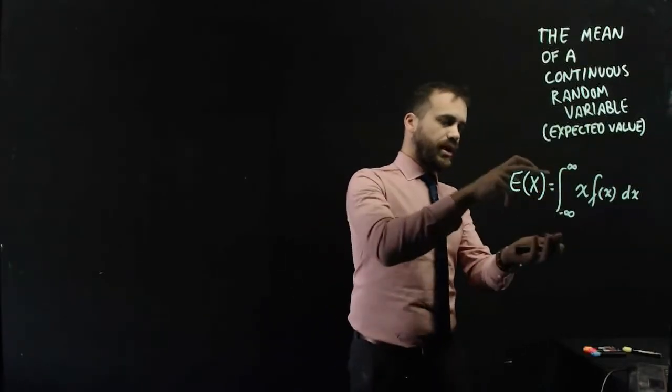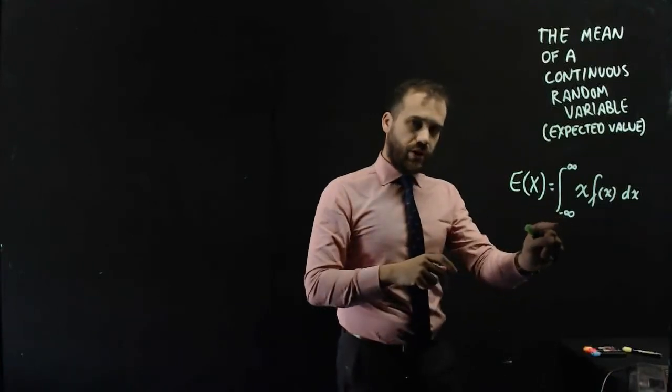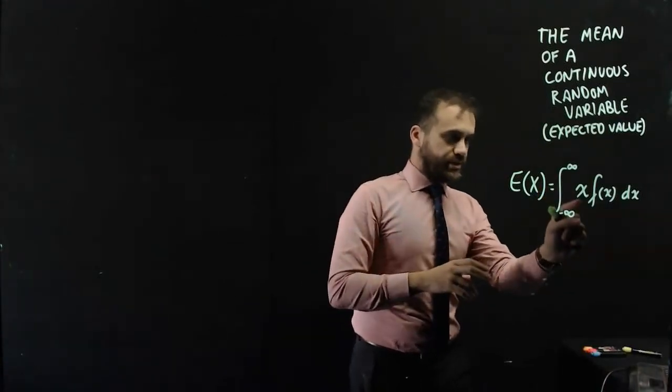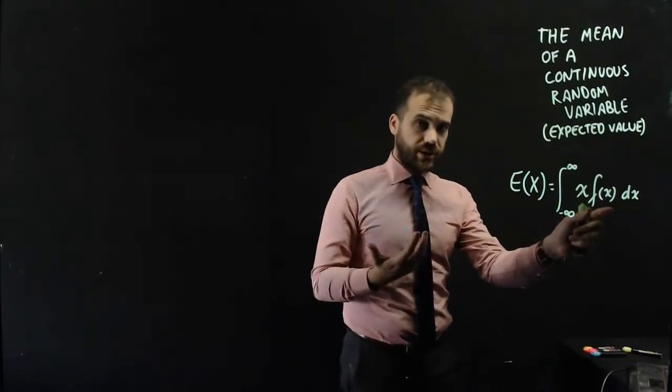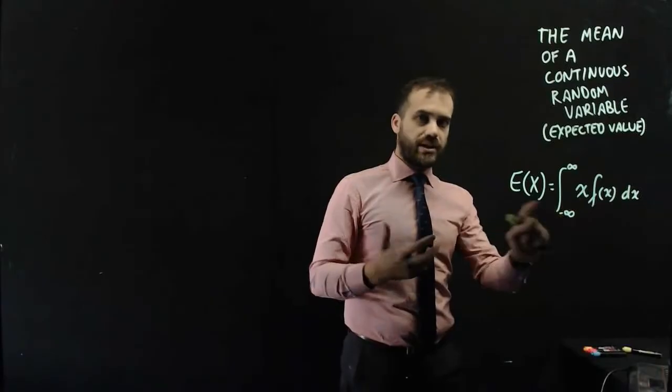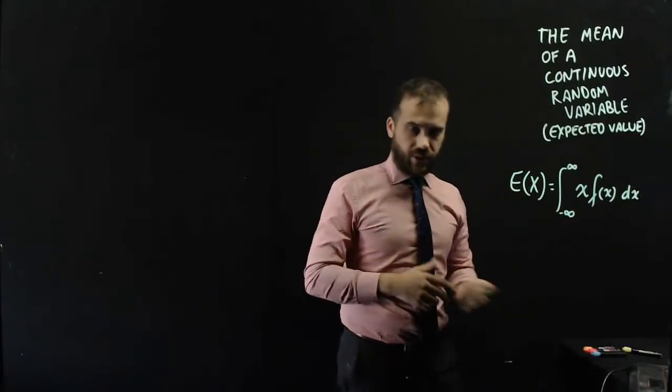is equal to the upper bound, lower bound, the integral between those two, x times f of x. So you take the original probability density function and multiply it by x, and then you take the integral from the upper bound to the lower bound.